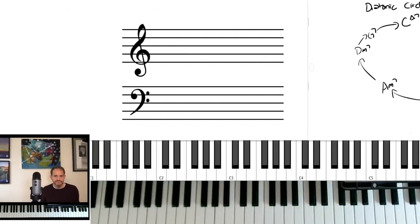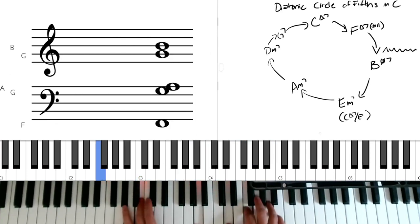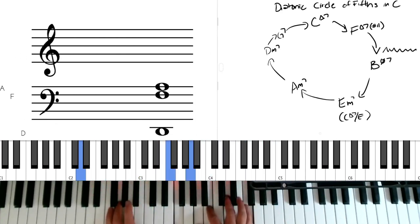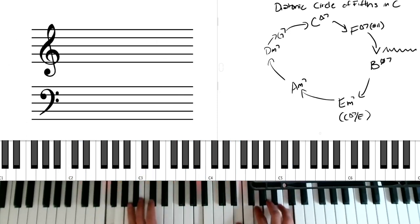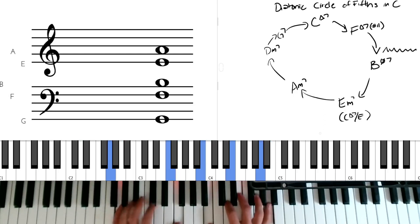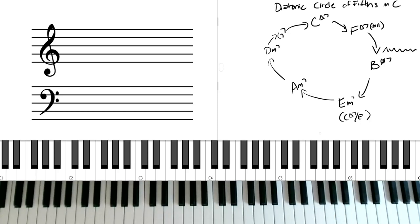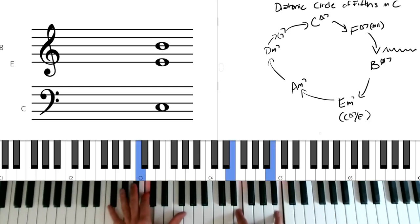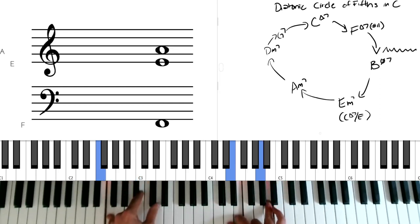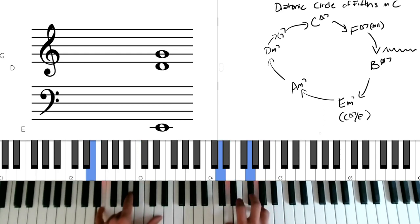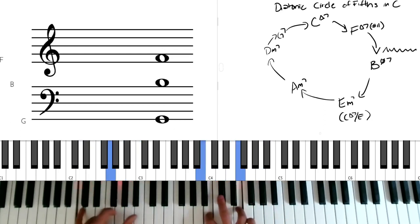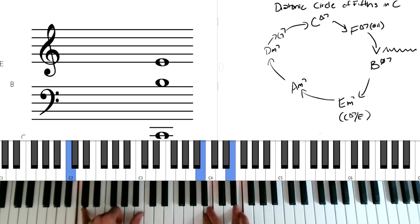For B, we say B half diminished seventh, same thing as B minor seven flat five. For E, we'll either say E minor seven, or slightly better, in my opinion, is C major seven over E. Then we have an A minor seven, a D minor seven, and a G seven. Let me play this for you. I'll play a nice big... So C, F, B, E, A, D, G. What a natural sounding progression. Each chord feels like it wants to lead to the next one.